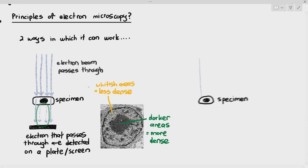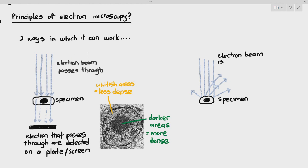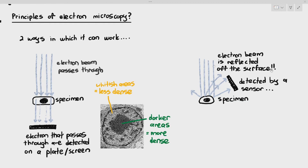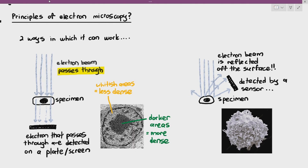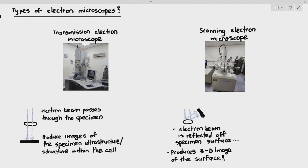Another way it can work is to adjust the frequency of the electron beams so they reflect off the surface of the specimen. It's not going through the specimen — it gets reflected off the surface and the reflected electrons are detected on a screen, plate, or sensor. In this case, it doesn't produce an image of what's inside the specimen, but produces an image of the surface, also in black and white. This gives us the idea of the two types: the transmission electron microscope and the scanning electron microscope.